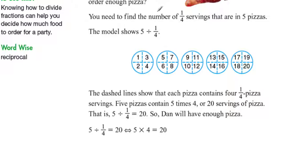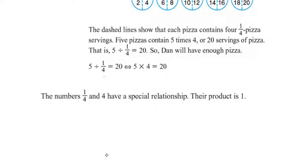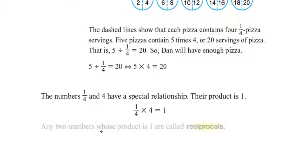Let's look at the relationship between one-fourth and four. The numbers one-fourth and four have a special relationship — their product is one. If I multiply one-fourth times four, the product will be equal to one. This brings us to the definition of a reciprocal: any two numbers whose product is one are called reciprocals.